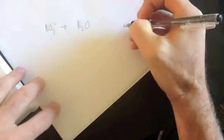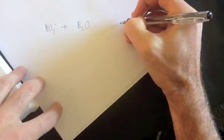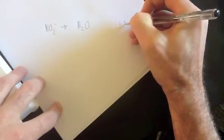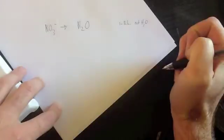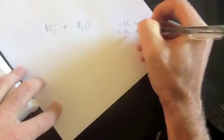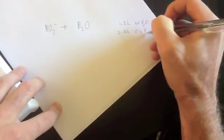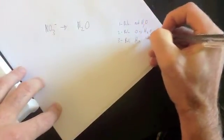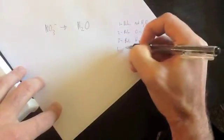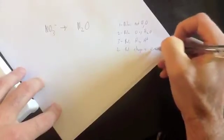Alright, balancing half equations. This involves a couple of little steps, there's four steps actually, and I write the steps down here. The first one is balance not H or O. The second one is balance O with H2O. The third one, balance H with H+. The fourth one, balance charge with electrons negative. These are just four steps that you're going to follow.